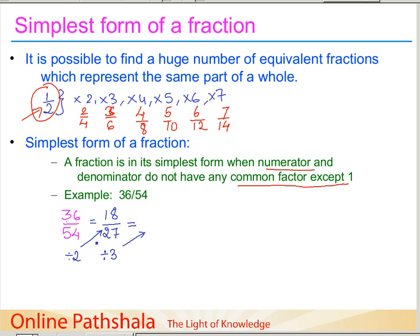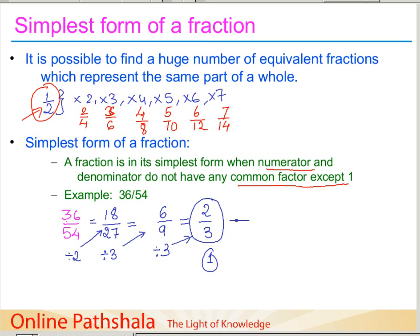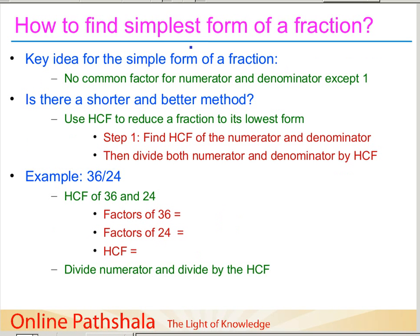Dividing 18 and 27 by 3 gives us 6 and 9. These two still share a common factor, so we divide both by 3 again to get 2/3. Now there is no other factor that can divide both numerator and denominator except 1. Hence 2/3 is the simplest form of 36/54, because all other equivalent fractions can be constructed from it by multiplying both numerator and denominator by a number.